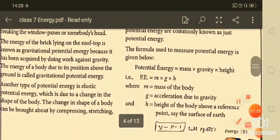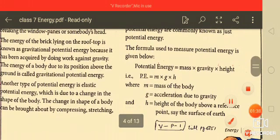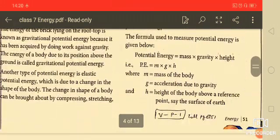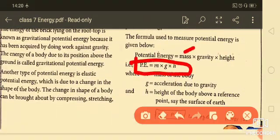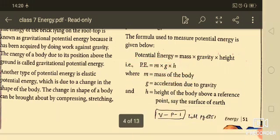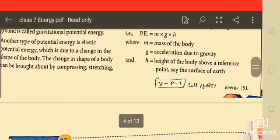And the formula used to measure potential energy is given here. That is PE is equal to mgh where m is mass, g is gravity and h is height and PE means potential energy.